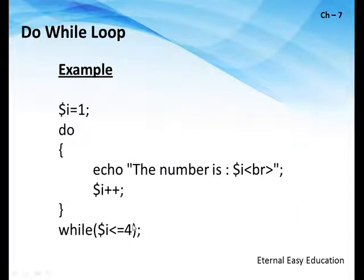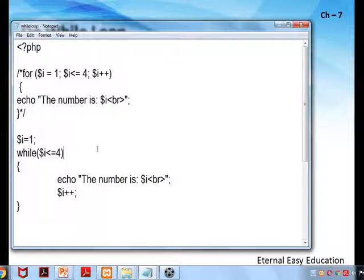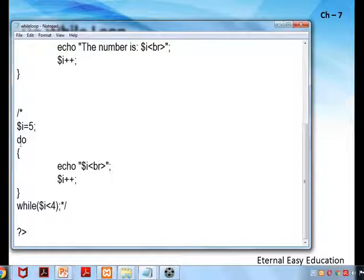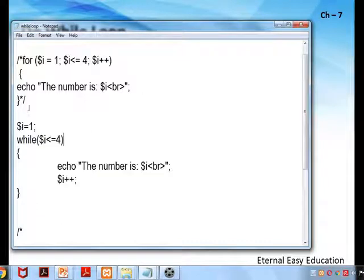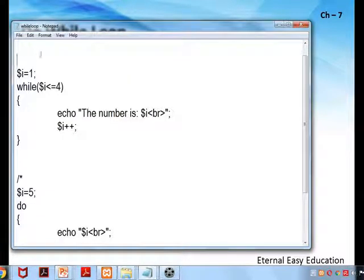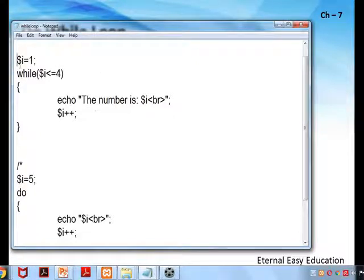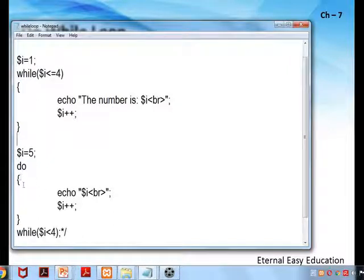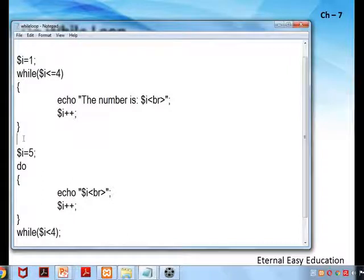Here is the same program — instead of while at the top, it is do, and the while statement is given at the back followed by a semicolon. See the do-while: same program, instead of while it is do. The open brace and close brace are the same, but instead of while at the top, the while is at the bottom in do-while. The same output is going to come for this program.